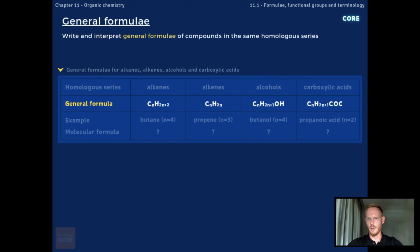A general formula represents the composition of all the compounds in a homologous series. Alkanes have the general formula CnH2n+2, alkenes CnH2n, alcohols CnH2n+1OH, and carboxylic acids CnH2n+1COOH. In each case, n represents the number of carbon atoms in the compound.